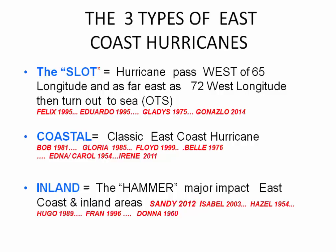There are three types of East Coast hurricanes. First, the slot hurricane — the hurricane that passes west of 65° longitude, essentially west of Bermuda, getting as close to the coast as 72° west longitude, and then turns out to sea. Classic examples include Felix 1995, Eduardo 1995, Gladys 1997, and Gonzalo 2014.